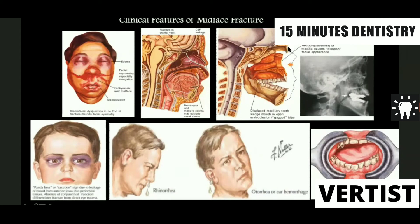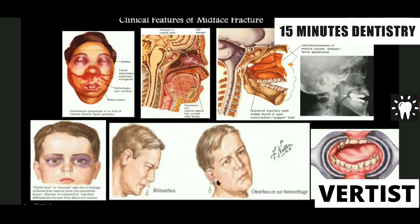There could be a raccoon's eye sign, which is bilateral periorbital ecchymosis. Another sign is the Battle sign, which occurs when there is a fracture of the middle cranial fossa — either from a Le Fort 3 or anterior cranial fossa fracture. With Le Fort 3 or Le Fort 2, there could be a fracture of the cribriform plate leading to CSF rhinorrhea because the meninges are torn. Similarly, fluid from the ears is called otorrhea, which can also result from a condylar fracture causing hemorrhage from the ear. Gagged occlusion may also be observed.